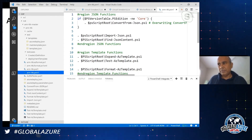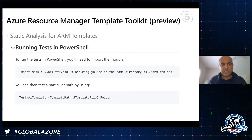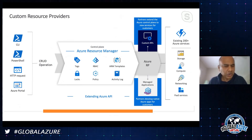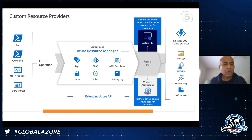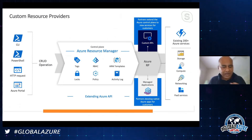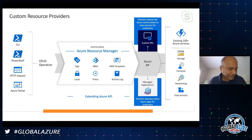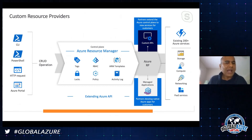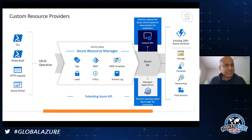Another new concept is custom resource providers. There are about 200 resource providers in Azure today - every service like storage, AKS, and Functions has a resource provider underneath. When you run an ARM template, it calls the right resource provider. Wouldn't it be nice to write your own resource provider and add it to the mix? This capability is now available in preview.